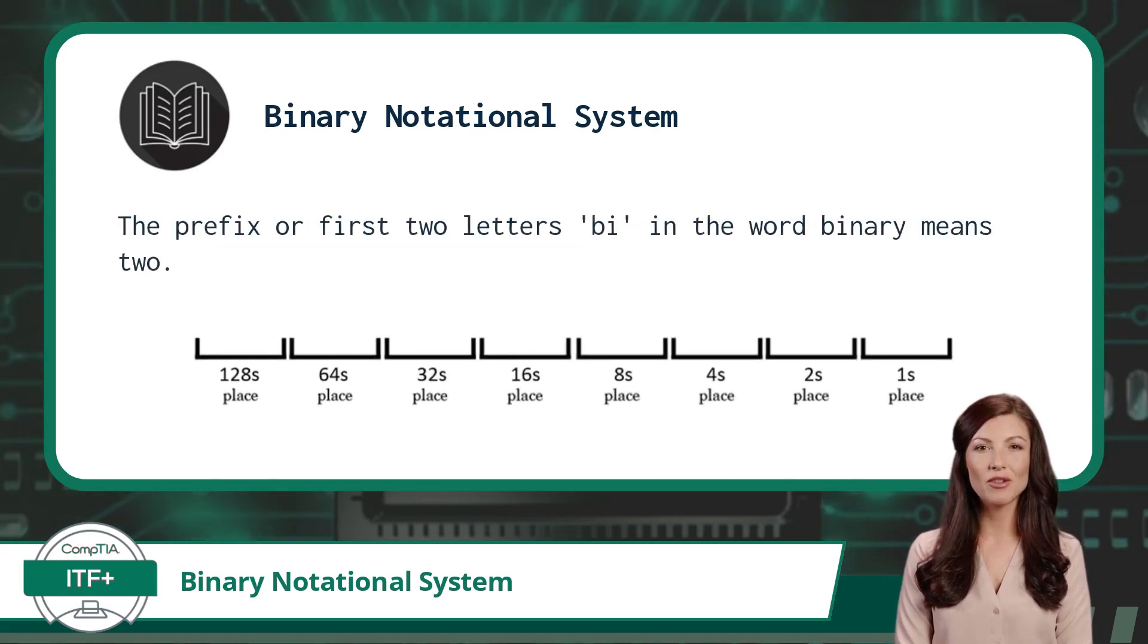The prefix, or first two letters 'bi' in the word binary, means 2 and refers to the fact that each place value in a binary number is 2 times greater than the place value directly to its right.